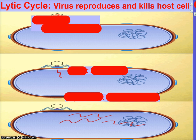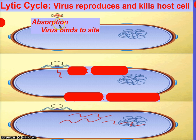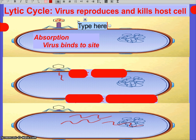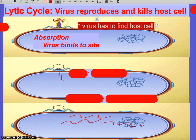The lytic cycle is, in a nutshell, when a virus reproduces and kills the whole cell at the end. Now let's look at the pictures and try to describe each step. What happens first? A virus attaches — we call this the absorption phase. A virus attaches to or binds to the host cell. The virus actually has to find the host cell first. A virus is specifically linked to a specific type of cell — there are specific types of viruses that can only attach to specific types of cells.